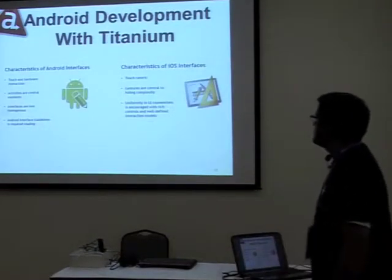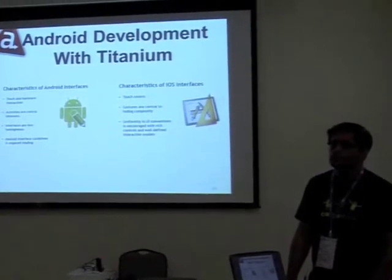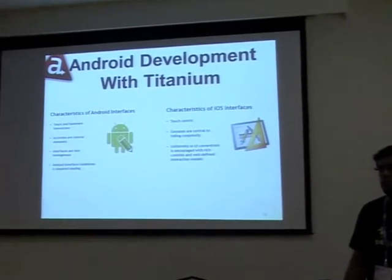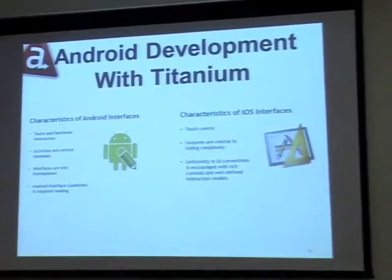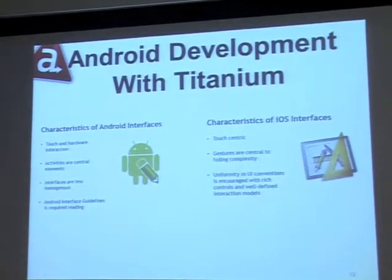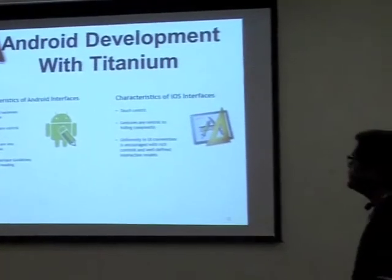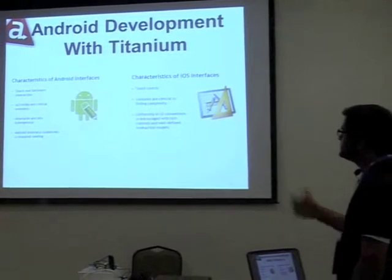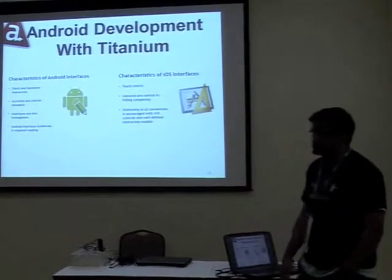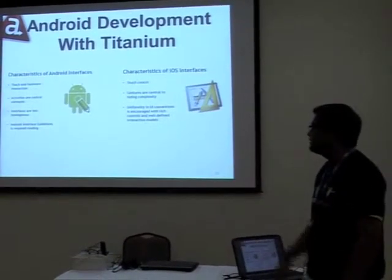Coming to Android development with Titanium — how many of you believe the UI is the most important aspect of a mobile application? We have consensus that UI is important. Characteristics of an Android interface: there is touch as well as hardware back button; activities are the backbone. Interfaces are less homogenous — phones of MDPI, HDPI, Super HDPI, tablets of 5, 6, 7, 9, 10, 11 inches. As a developer it often becomes a nightmare because you have to read the guidelines if you want to support certain devices.